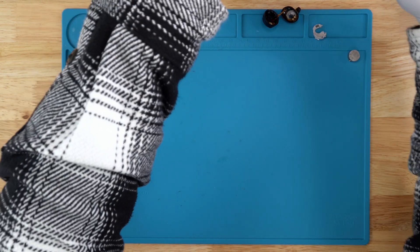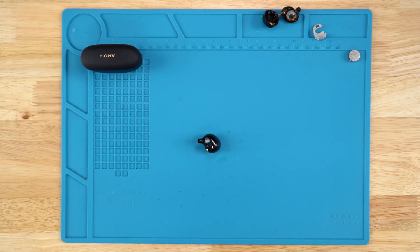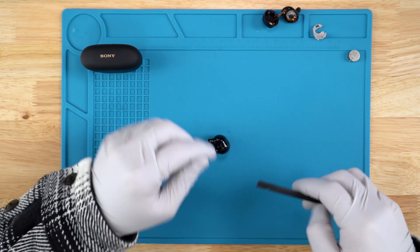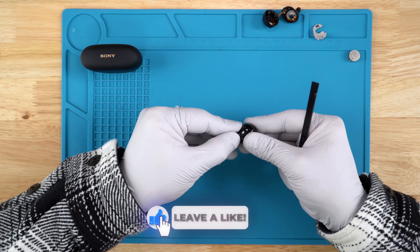We'll go ahead and start with heating it up and opening it up with the plastic spudger. Once the glue softens enough you should be able to open it up just with your hands like so as well with the plastic spudger and we will also remove the battery.